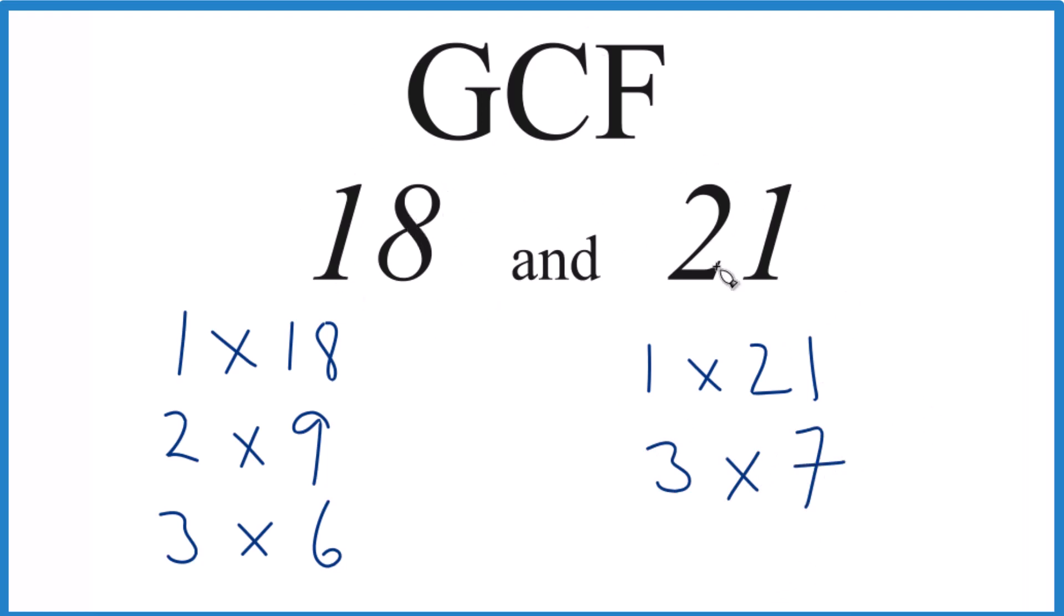So we're looking for the greatest common factor for 18 and 21. 1, that's a factor of both, and then 3, that's a factor. And it looks like 3 is the greatest common factor. So 3 is the highest number that goes into both 18 and 21 evenly. So in answer to our question, the greatest common factor for 18 and 21 is 3.